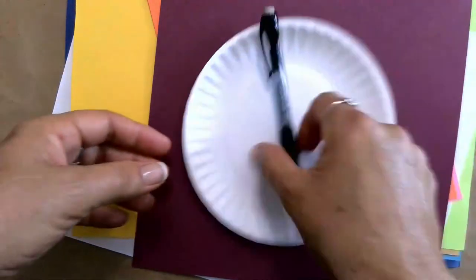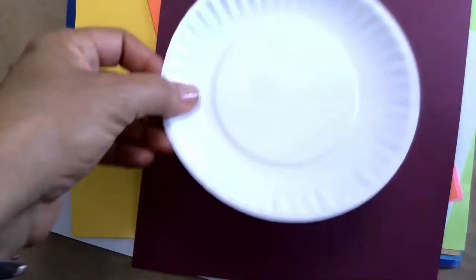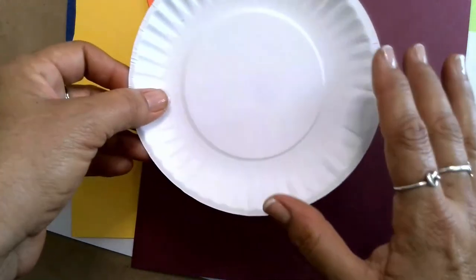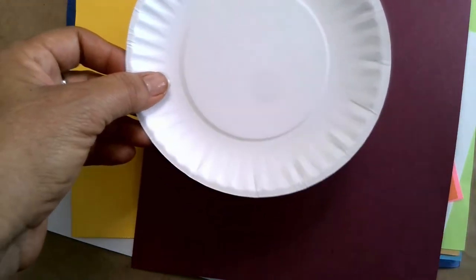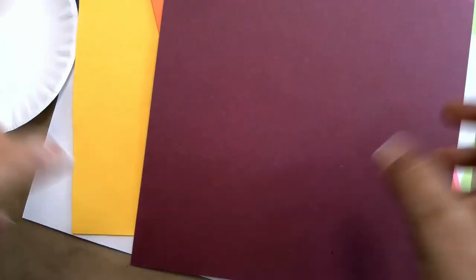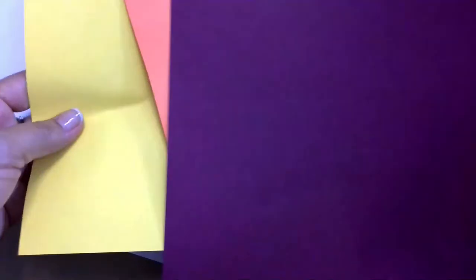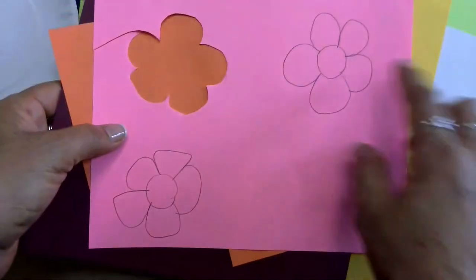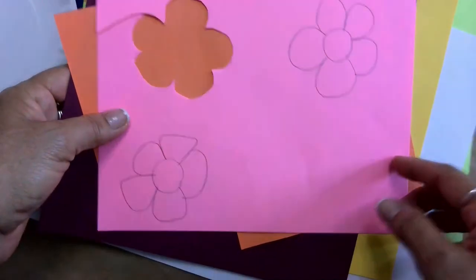Safety scissors, a pencil, and yes the paper plate was really not included in the list but I'm pretty sure you guys have one. I want to show you something. So I used different colors of construction paper and I traced some flowers and then I cut them out.